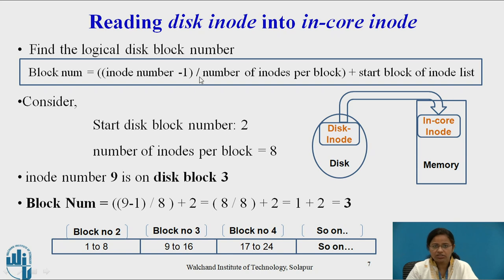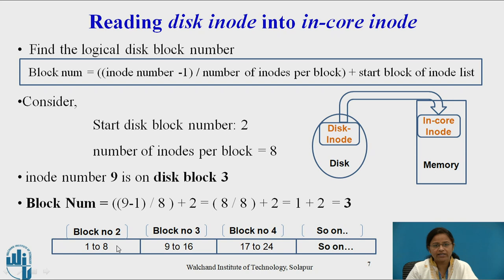Consider the start disk block number is 2 and the number of inodes per block is 8. To find the block number for inode number 9, using the formula we get block number = (9 − 1) / 8 + 2 = 3. Looking at the diagram, blocks start at block number 2 with capacity 8 each: inodes 1 to 8 are in block 2, inodes 9 to 16 are in block 3, and inodes 17 to 24 are in block 4. So inode number 9 is present in block number 3. Similarly, inode number 18 would be found in block number 4.